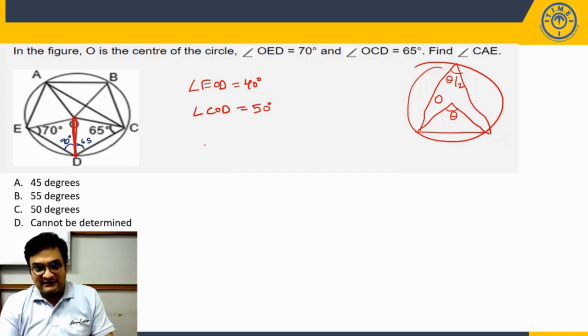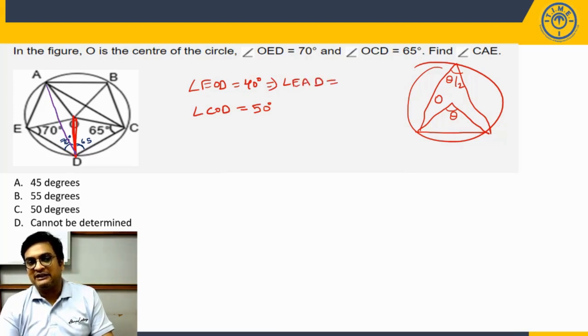Now angle EOD we know is 40 degrees. Let us connect A with B. So when I connect A with B, if angle EOD is 40 degrees, can I say angle EAD, which is the angle subtended by the same chord anywhere on the circle, will be half of this? Correct.